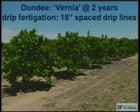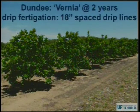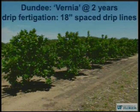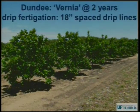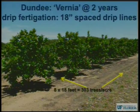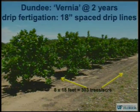Here's a different grove — a commercial grower in the Dundee area. This was taken last year, so it's now a year older. At two years, grown with drip fertigation at 18-inch spaced drip line. The spacing was eight by 18 feet, which is 303 trees per acre — fairly high density.